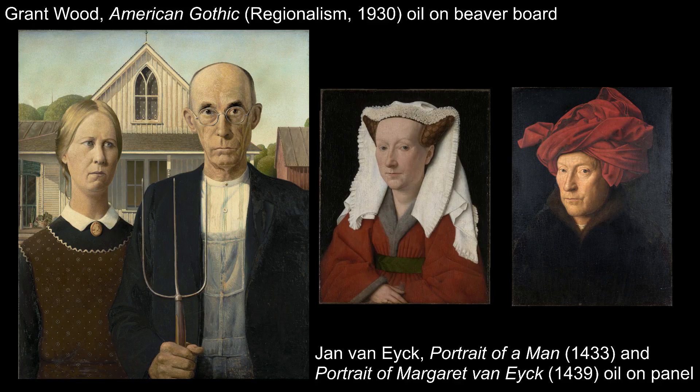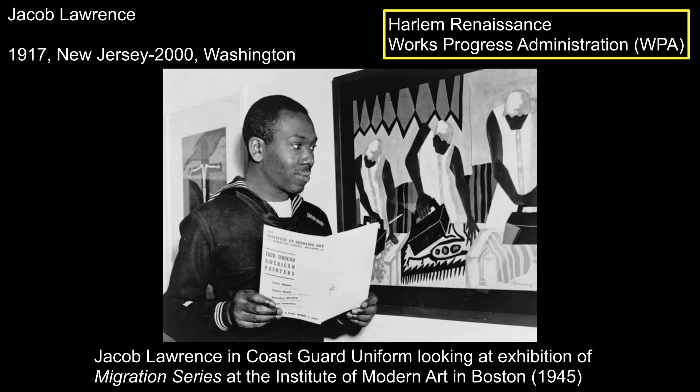The federal government started many programs to help people weather the economic and financial story of the 1930s, including trying to support artists. In 1935, the Works Progress Administration was founded, which provided financial support to builders, artists, and other arts professionals. This resulted in federal arts funding, and many of the artists who rise to prominence in later decades and who made contributions to the story of American art got their feet wet working on WPA projects. Jacob Lawrence was from Harlem in New York and grew up surrounded by the rich, creative atmosphere of the Harlem Renaissance. He also benefited from WPA funding, which supported the founding of the Harlem Community Art Center, with which he was associated, and he also worked on a WPA project.